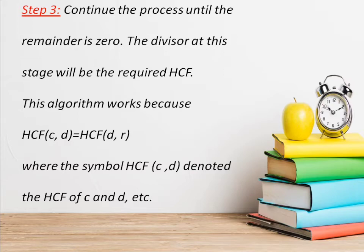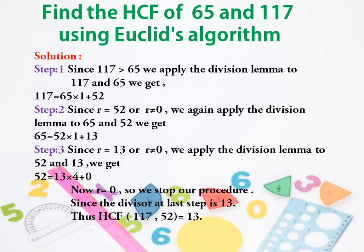Now find HCF of 65 and 117 using Euclid's algorithm. Look here which number is greater: 117 greater than 65. So apply the theorem and do it until we get the remainder equal to 0. Here in the last step we get that the divisor is 13. So here the HCF of 117 and 52 is equal to 13.